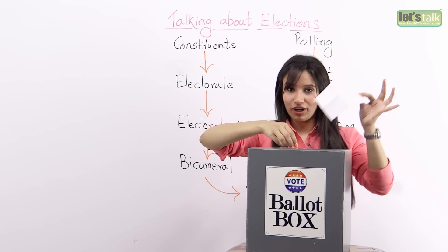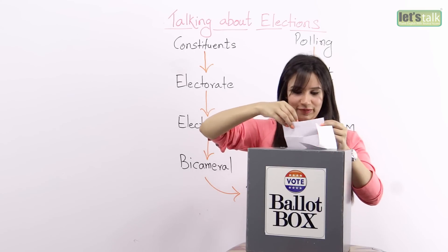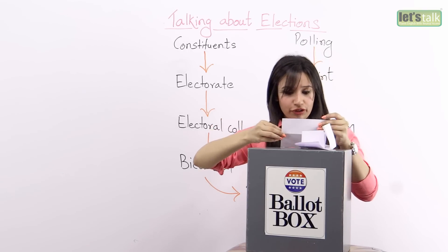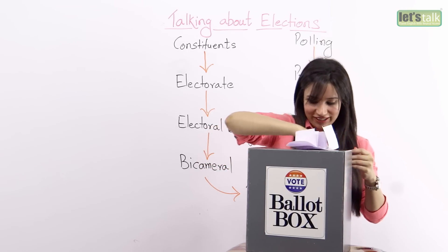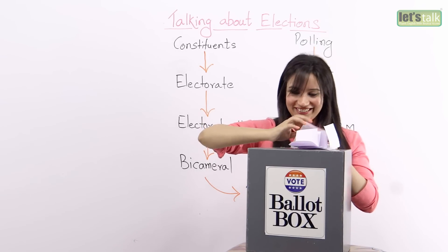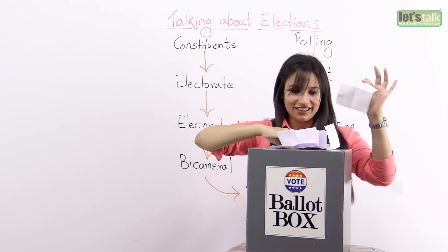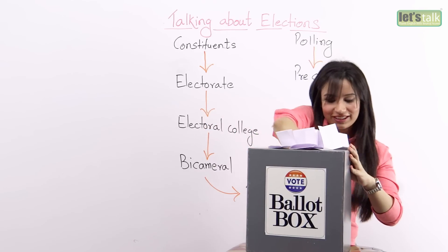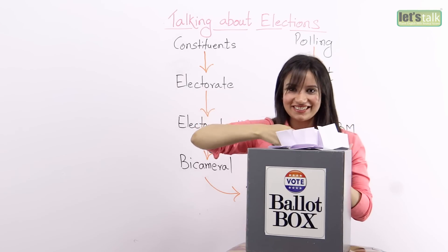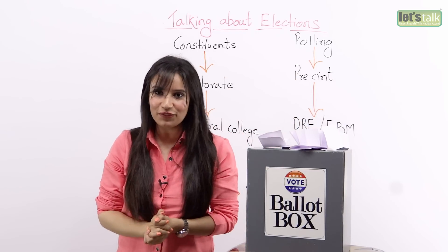The first vote goes to Marcus. The second vote goes to Hillary. The third vote goes to Margaret. It's getting more and more interesting. The fourth vote is for Donald. The fifth vote is for Will. And here we have the decisive vote — the final vote which goes to Marcus, and it is Marcus who has received plurality and he's the new president of the nation.